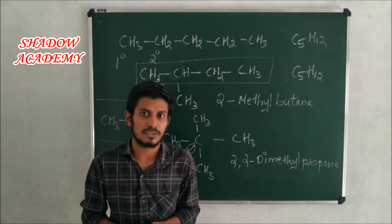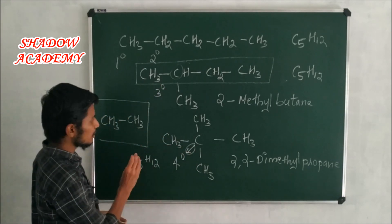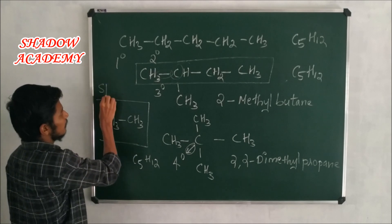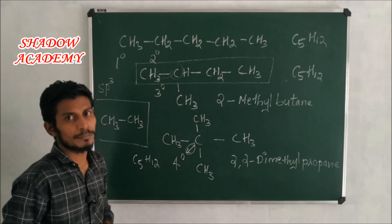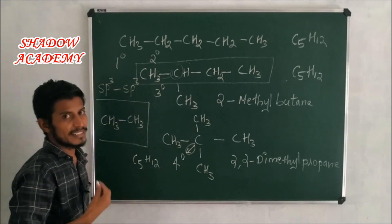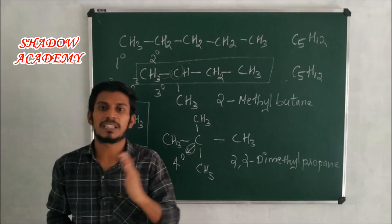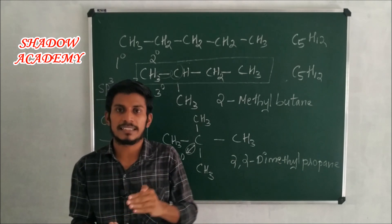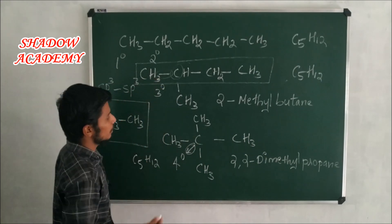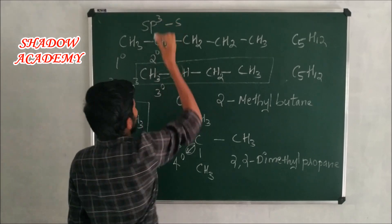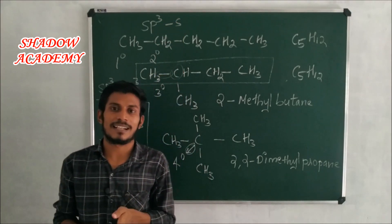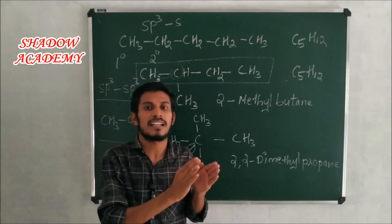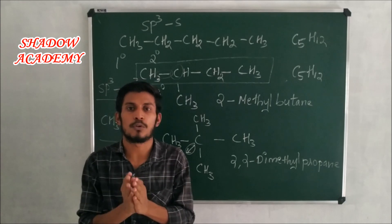In alkanes, the carbon-carbon bond involves SP3-hybridized carbons. The carbon-carbon bond in alkanes is an SP3-SP3 sigma bond. The carbon-hydrogen bond is an SP3-s bond, formed by overlap between a carbon SP3 orbital and a hydrogen 1s orbital.